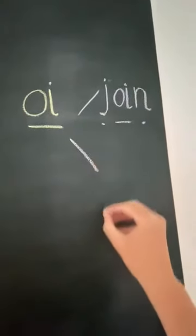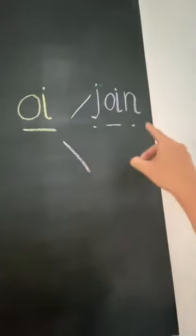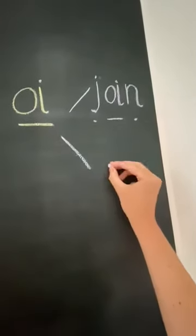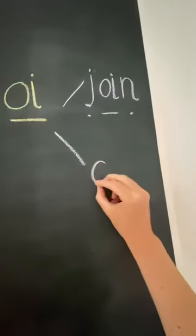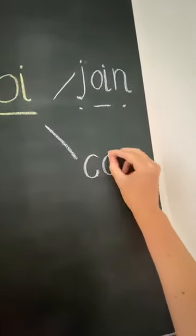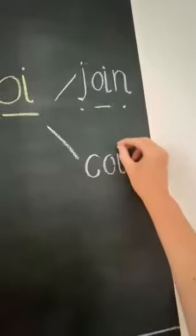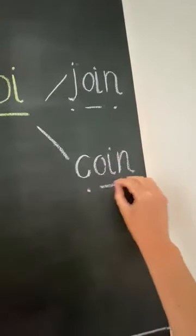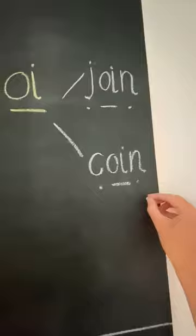And this word rhymes with join — it's coin. C, oi, n. C, oin — coin.